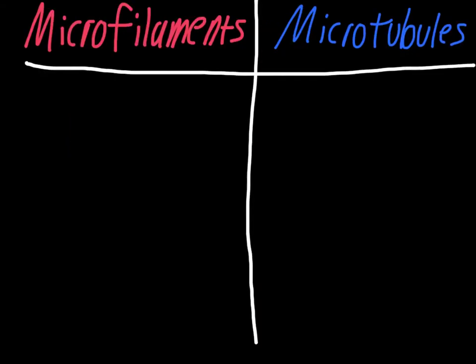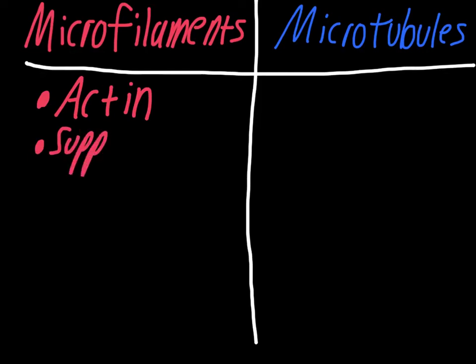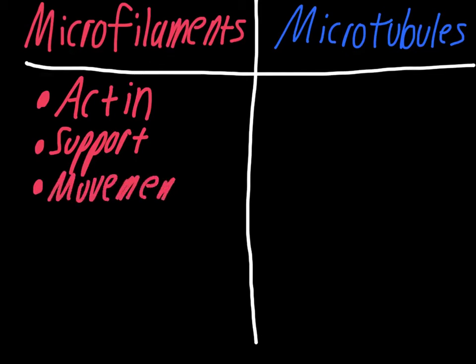To break these down and go through points unique to each one: microfilaments are made of a protein called actin, which is also an important protein used in our muscles. Their main function is to support the membrane. They are used for movement in some things, but not many — usually crawling organisms like the amoeba that inch along, so very simple single-celled organisms.